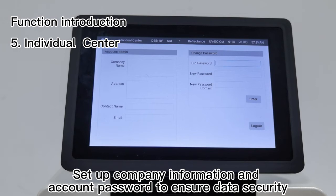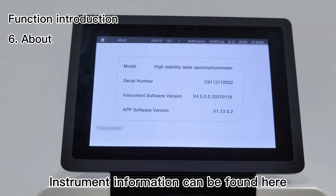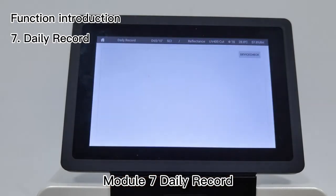Module 6 - About: Instrument information can be found here. Module 7 - Daily Record: The operation of the instrument is recorded in the log.